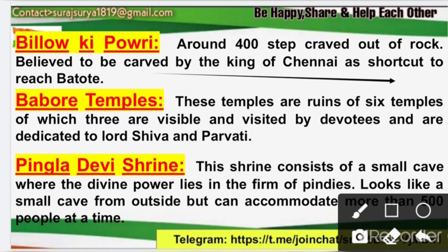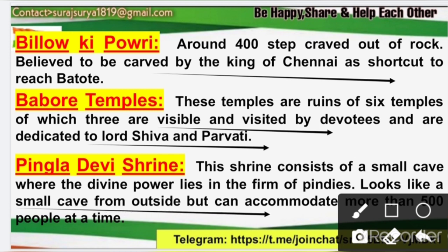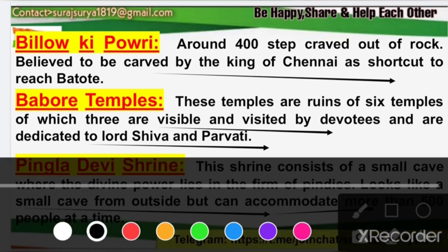There are also Babori Temples here. Of the original temples, currently only three are visible — the others have been destroyed. Many devotees visit these temples. These temples are dedicated to Lord Shiva and Parvati — the Babori Temple is in Udhampur district and is dedicated to them. Next is the Pangla Devi Shrine. This is a small cave which has a pindi inside and is considered to have divine power. Although it appears small from outside, it can accommodate at least 500 people inside. It is also known as Pangla Mata.